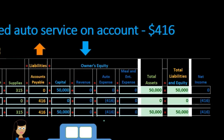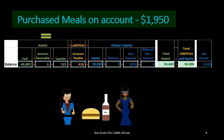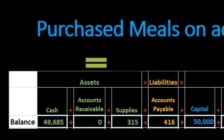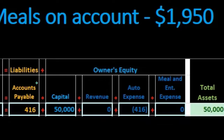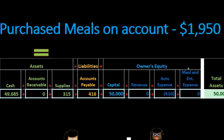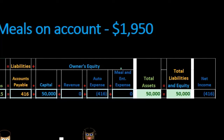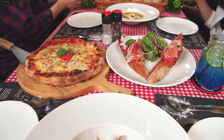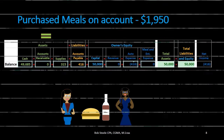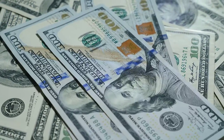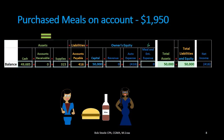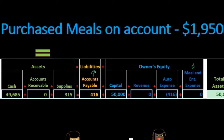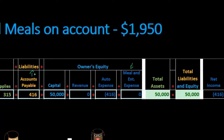Net income is going down by $416. No revenue; one expense of $416. Next transaction: purchase meals on account, $1,950. Is cash affected? No — we purchased it on account, so accounts payable is affected. What did we get? Meals and entertainment. That is an expense in the equity section; it will bring down total equity just like all other expenses. So meals and entertainment decreases equity, and we must do something to another account — not cash, since we didn't pay cash.